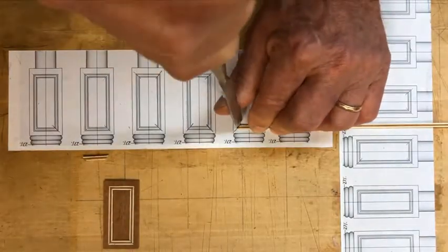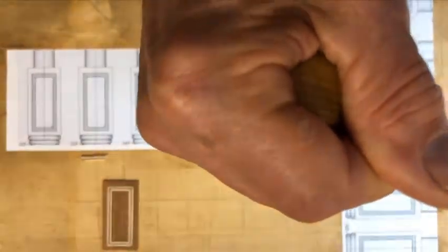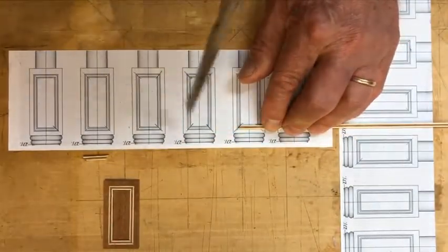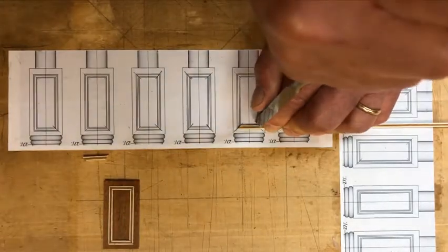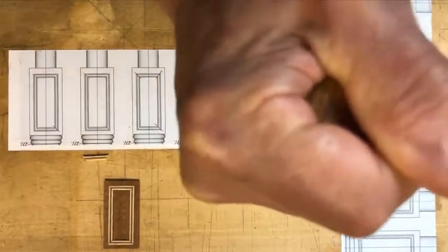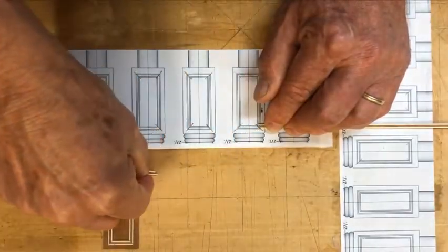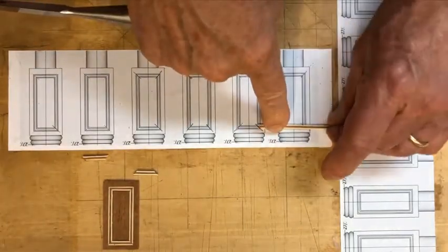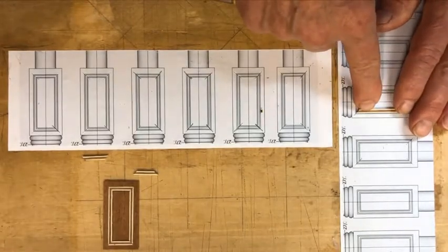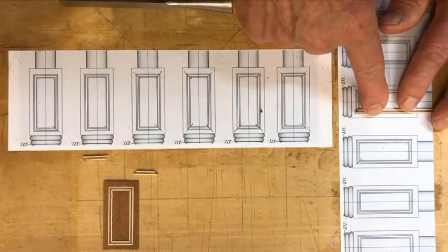This is phase two of making these inlay patches for the square part of the column. It involves accurately slicing these little mitered pieces of banding that will be filled in with the other pieces to complete the patch that would be glued as an assembly onto the column.